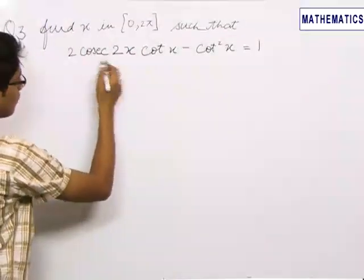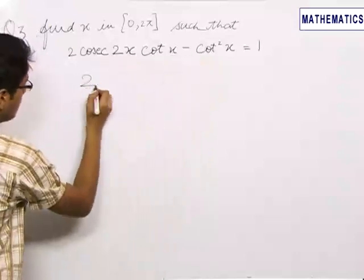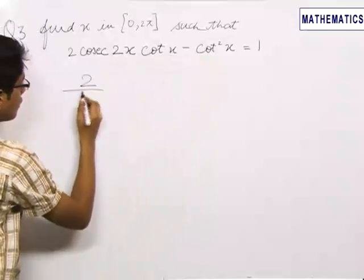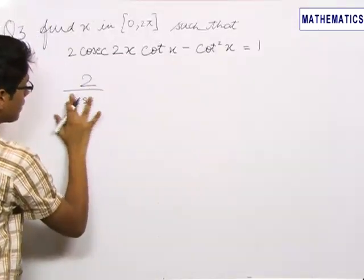The basic approach is we can convert all the given cosec and cot into simple cos and sin. Cosec 2x can be written as 1 upon sin 2x.